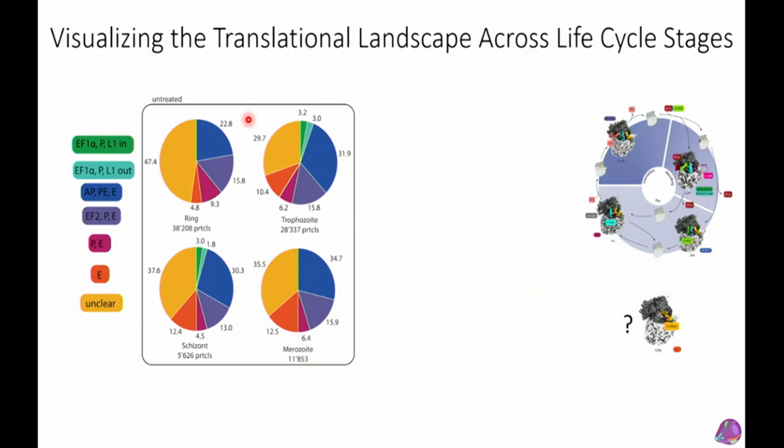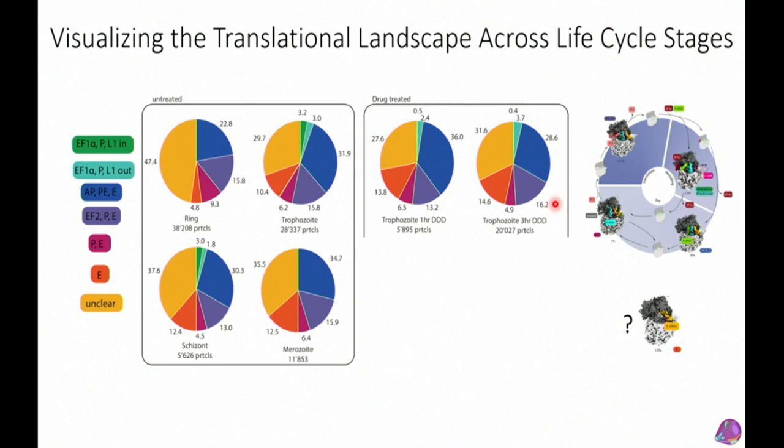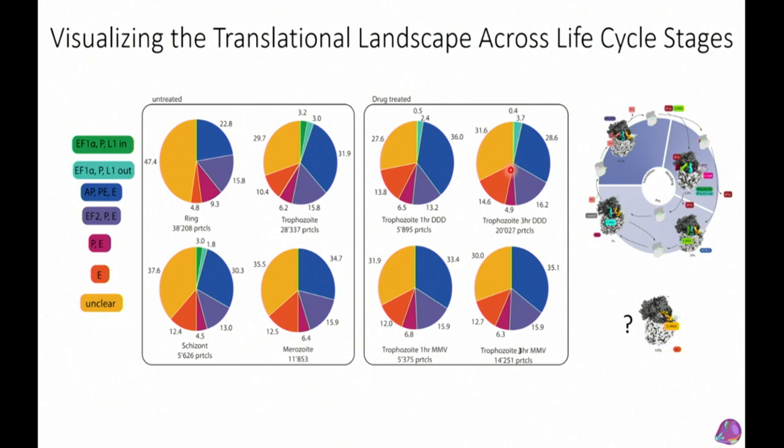Looking at statistics across life cycle stages, we see a massive difference between crudely fractionated ex vivo samples and in situ samples — far more states are visible in situ. With three-hour drug-treated trophozoites, we see a subtle but real change in distribution, which we're digging into further.